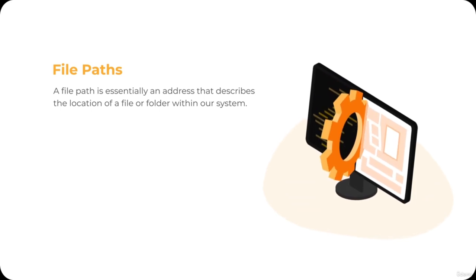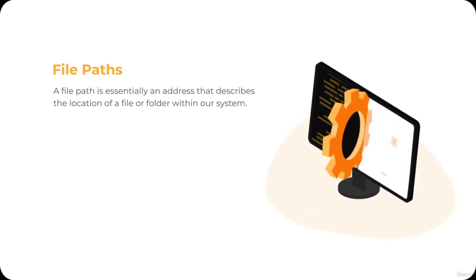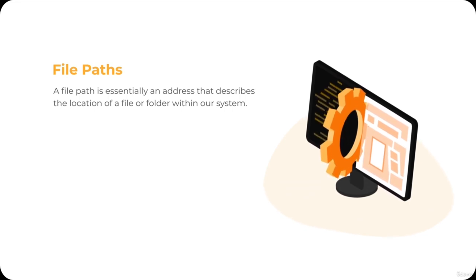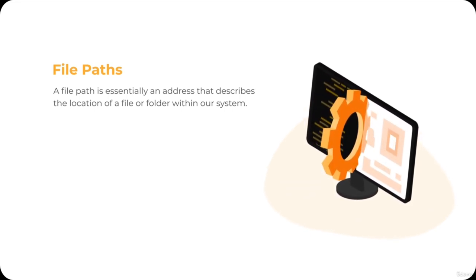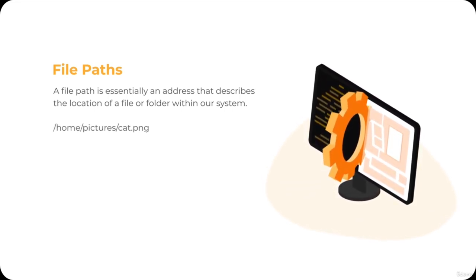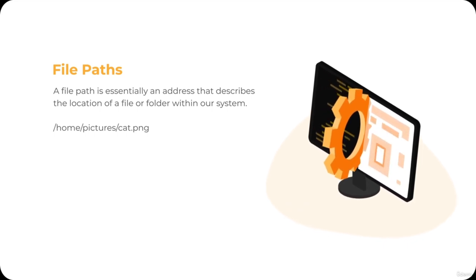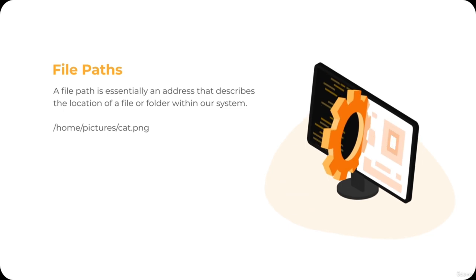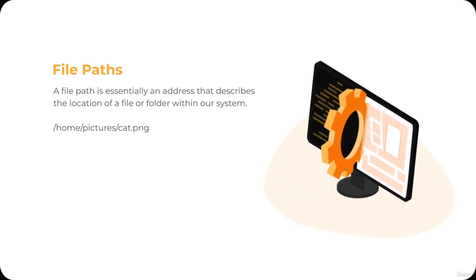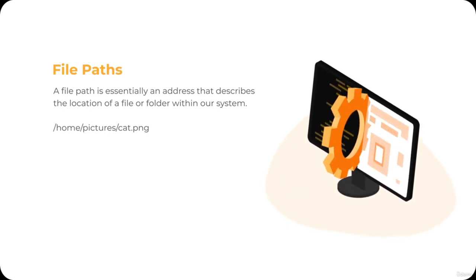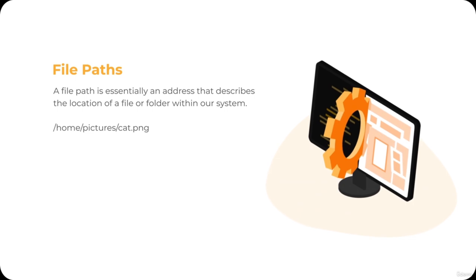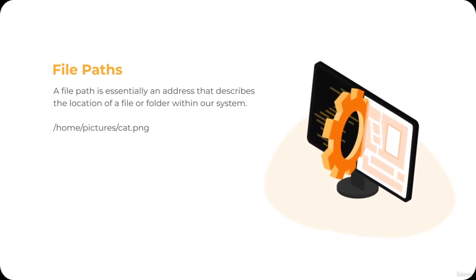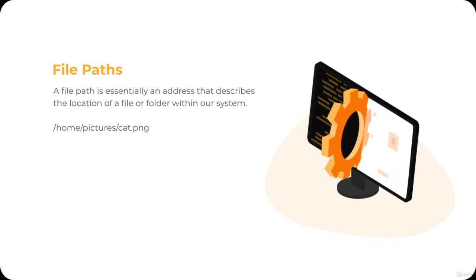Since we don't have the luxury of using a mouse, we need some way of telling the terminal which files and folders we want to interact with. This is where file paths come into play. A file path is essentially an address that describes the location of a file or folder within our system. File paths are made up of a series of names separated by slashes that help us pinpoint specific files or folders within our computer.